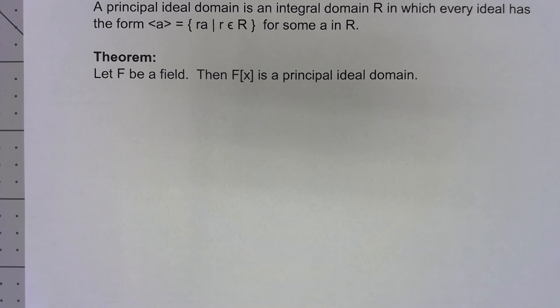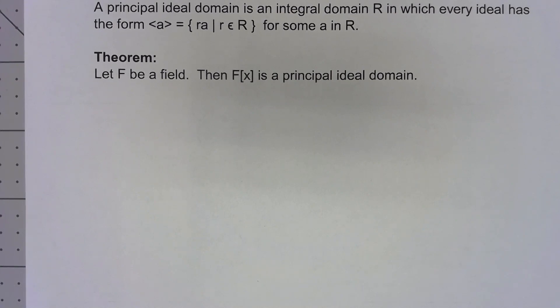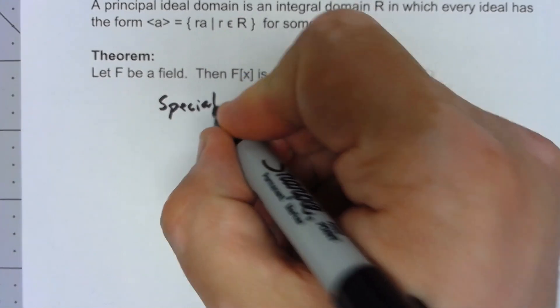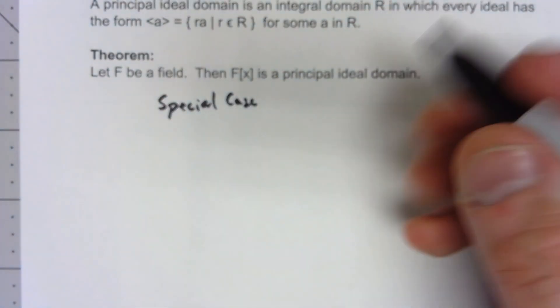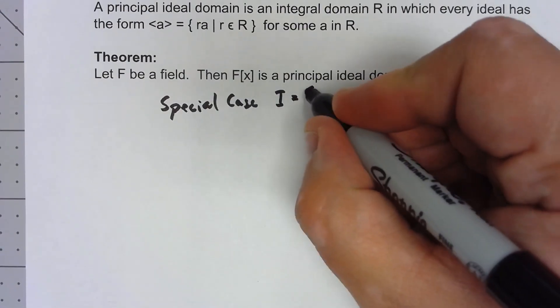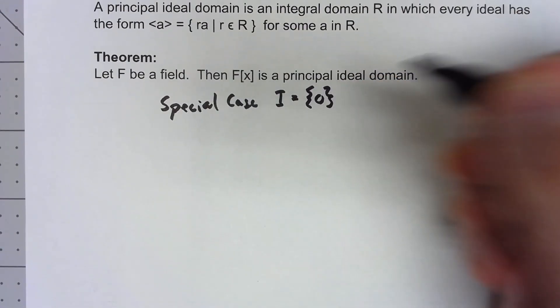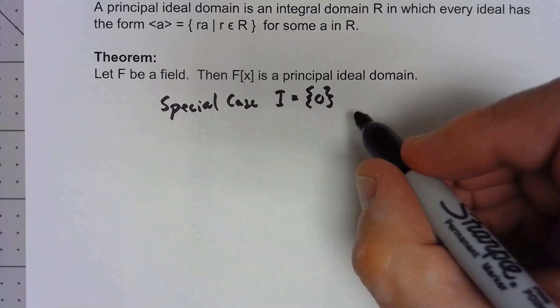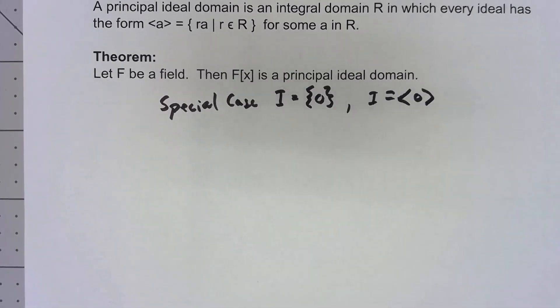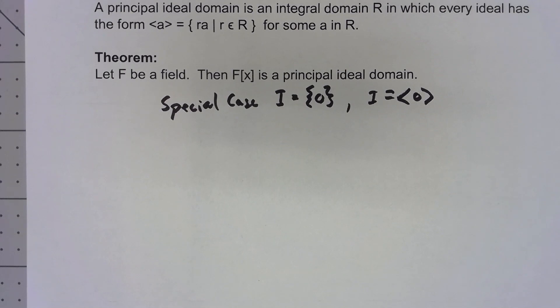Why is that? Well, first of all, just a special case. If the ideal I'm talking about is just the zero element, then it's equal to the thing generated by the zero element, so that's covered.